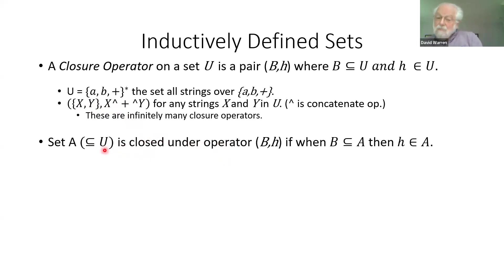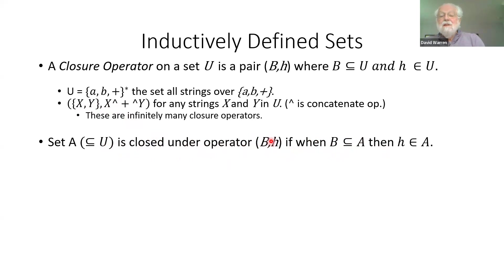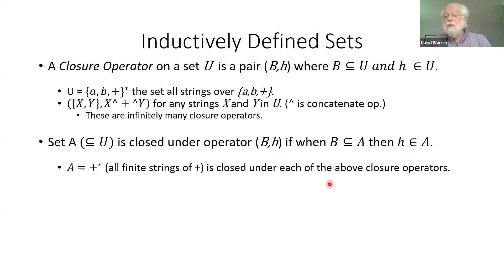A subset of the universal set is closed under an operator if whenever the set of the operator is a subset of A, then the element H of the operator is in A. The set of all strings over plus is closed under each of these infinitely many operators: if you take any two sequences of pluses and put a plus in the middle, you get another sequence of pluses. So that set is closed under all those operators.